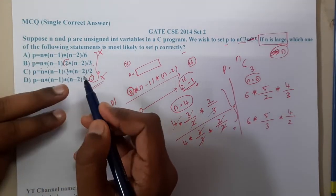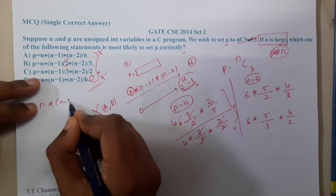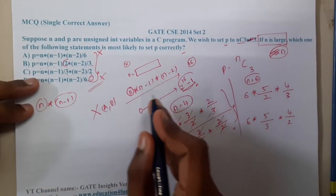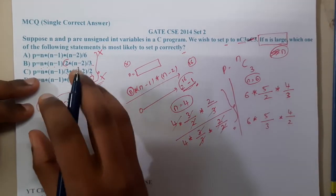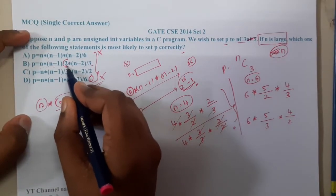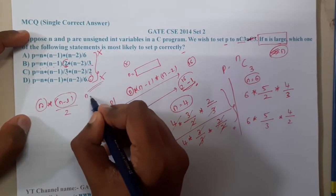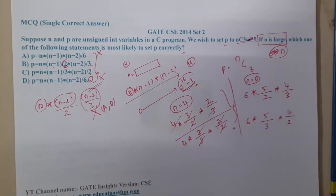If here in the denominator we have a 2, among n or n minus 1, any one of them will be an even number. So division by 2 will be possible either with this or with this, and the number will reduce. Our goal is to reduce the number.